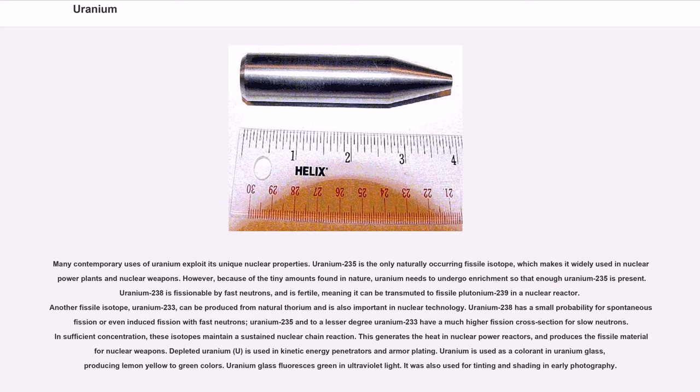Another fissile isotope, uranium-233, can be produced from natural thorium and is also important in nuclear technology. In sufficient concentration, these isotopes maintain a sustained nuclear chain reaction. This generates the heat in nuclear power reactors and produces the fissile material for nuclear weapons.